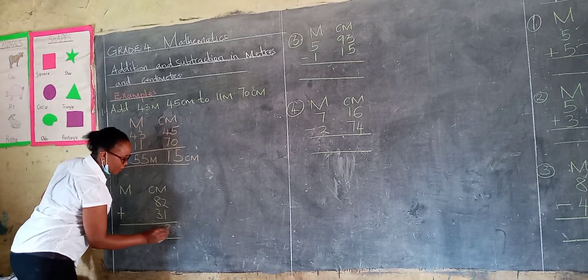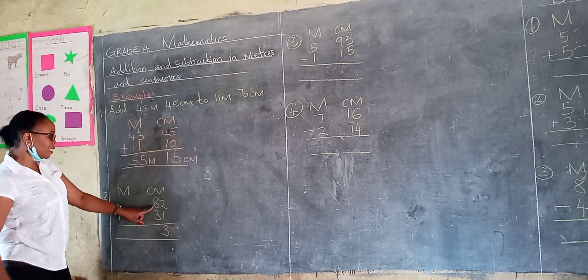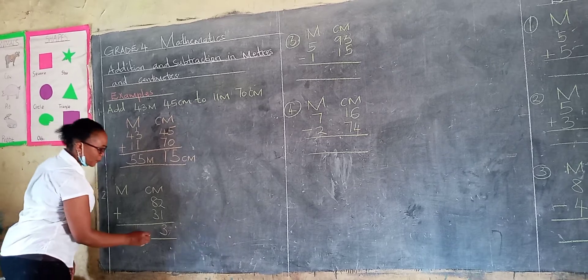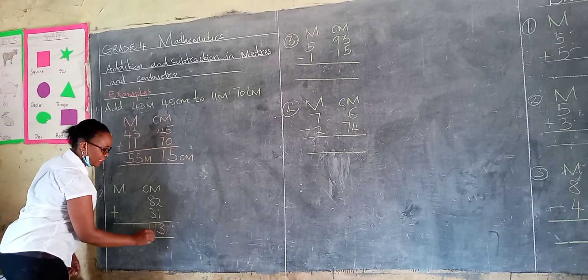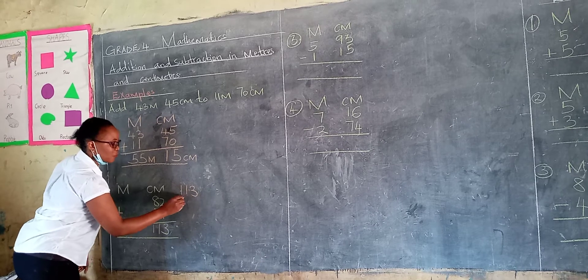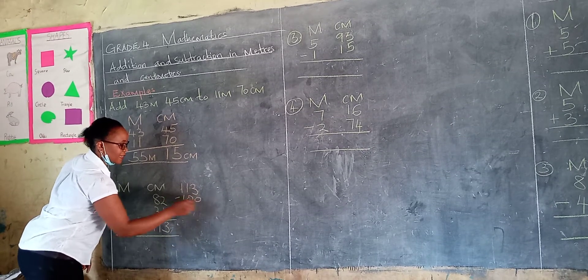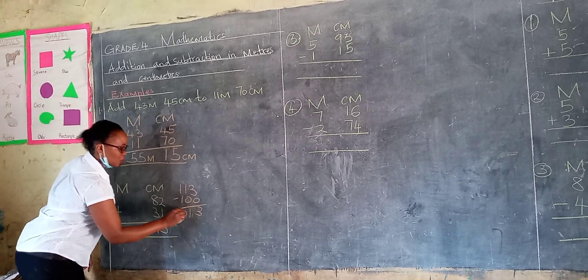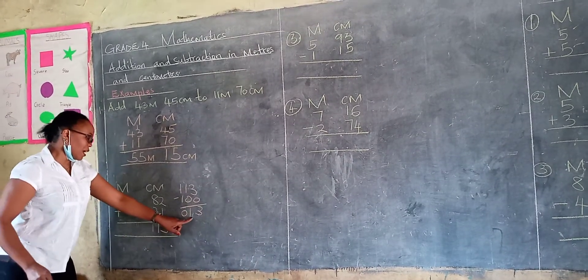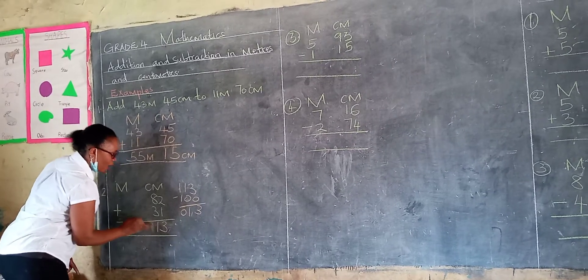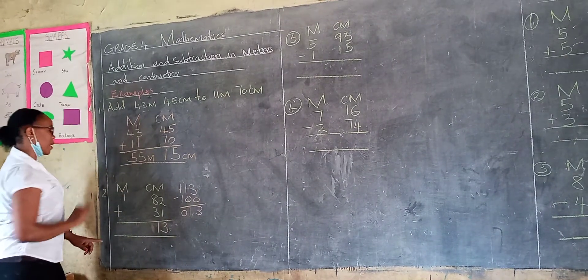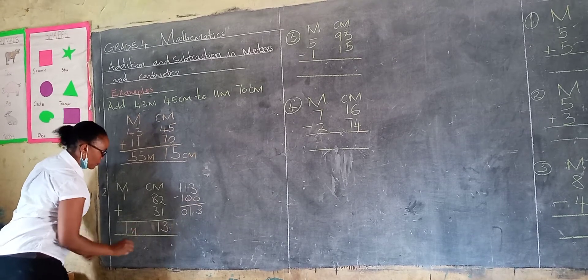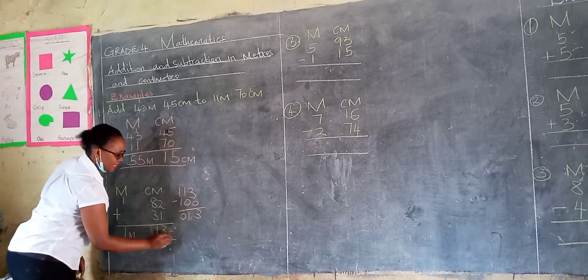So let's add together. 2 plus 1 is 3. Then 8 plus 3 is 11. So we are supposed to write 11 here. If we write 11, we will get 113. If we take away 100, we remain with 13 and those are centimeters. So this one, we take it to the side of meters. Then we drop it here. So our answer would be 1 meter 13 centimeters.